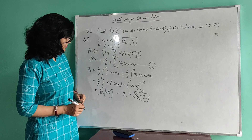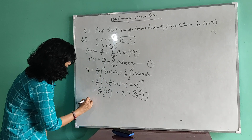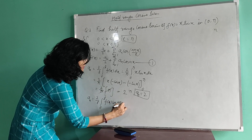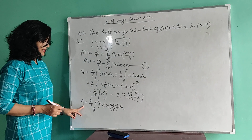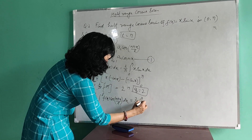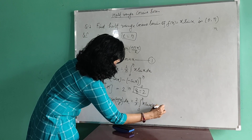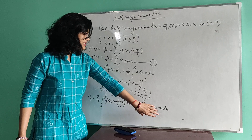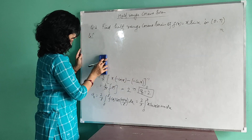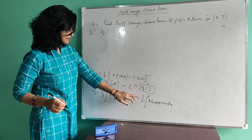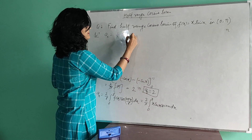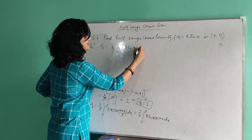Next we find aₙ. The formula is: aₙ = (2/l)∫₀ˡ f(x)·cos(nπx/l)dx. Substituting l = π, this becomes: aₙ = (2/π)∫₀^π x·sin(x)·cos(nx)dx.